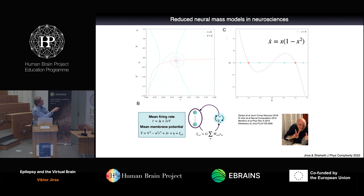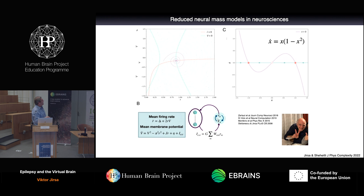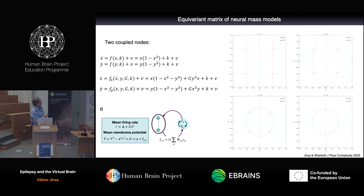We live in one dimension. This is one stable fixed point, another stable fixed point, a threshold. Let's build a network from this. When I take this one node and build a two-node system, two coupled nodes, then we are in two dimensions — essentially a down-down state, up-up state, up-down, down-up. They are uncoupled so it's trivial.